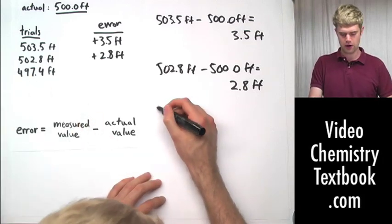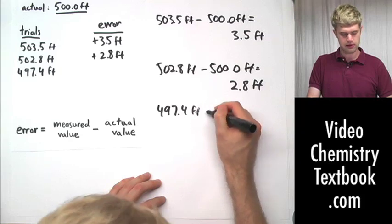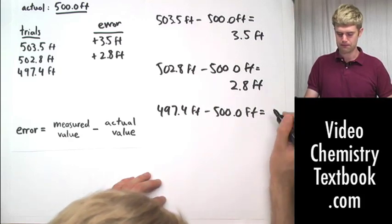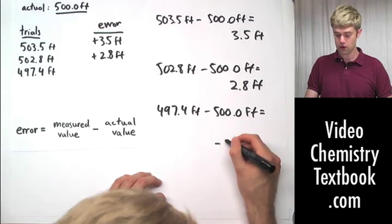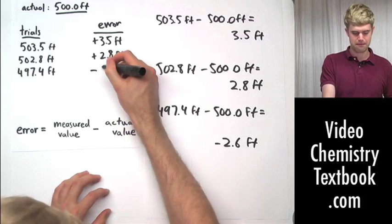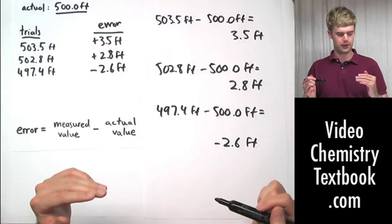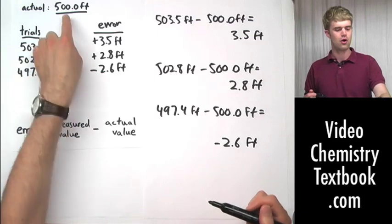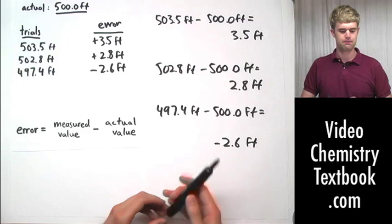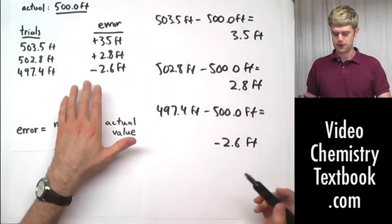Now finally for our last trial here, 497.4 feet minus 500.0 feet is going to give us, in this case, negative 2.6 feet. And so again we'll say minus 2.6 feet to indicate that we low balled it a little bit there. This number here, 497.4, was lower than the actual value of 500.0 feet. So here we've expressed our various errors associated with this measurement.